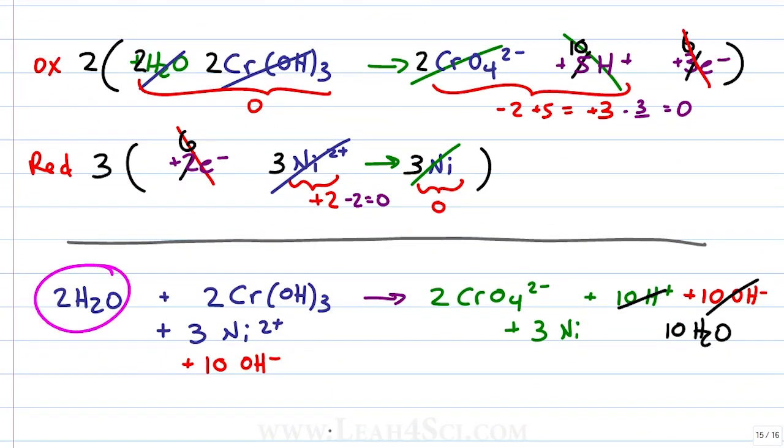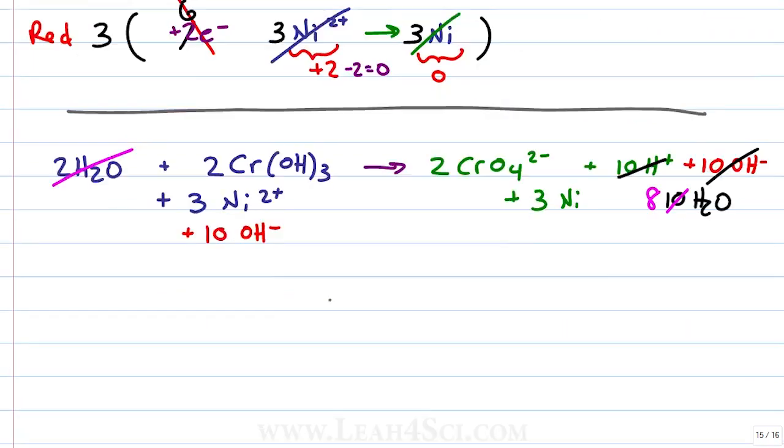On the reactant side, we have 2 water molecules. On the product side, we have 10 water molecules. We can't completely cancel it out, but what we can say is 2 on the left will cancel out 2 of the 10 on the right, so 10 - 2 means 8H2O remaining.